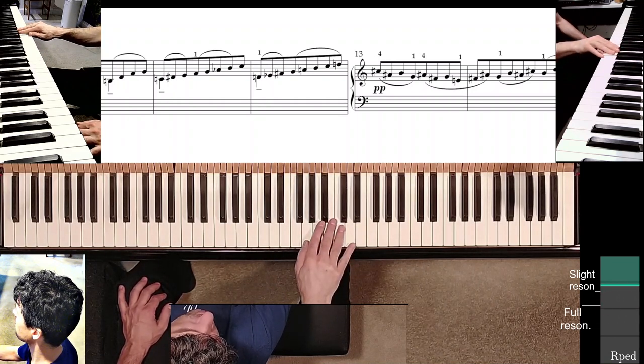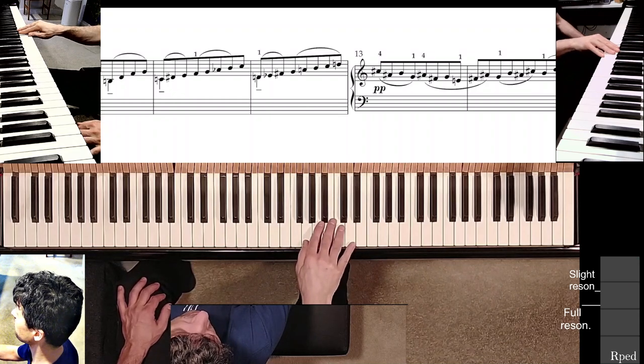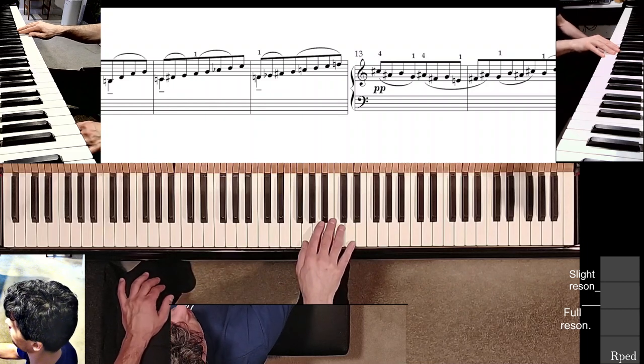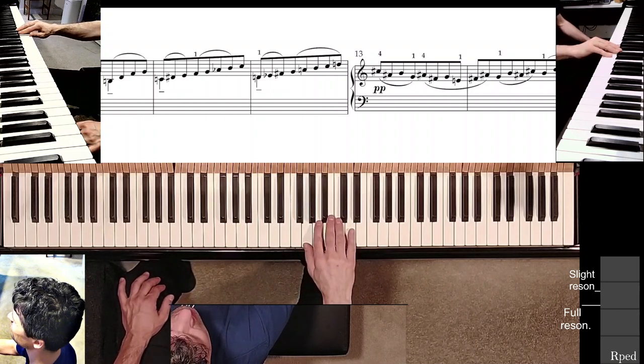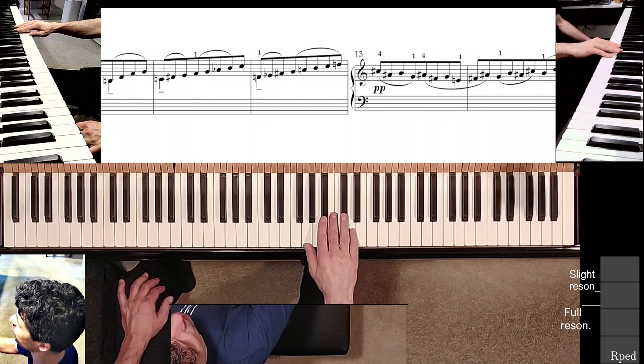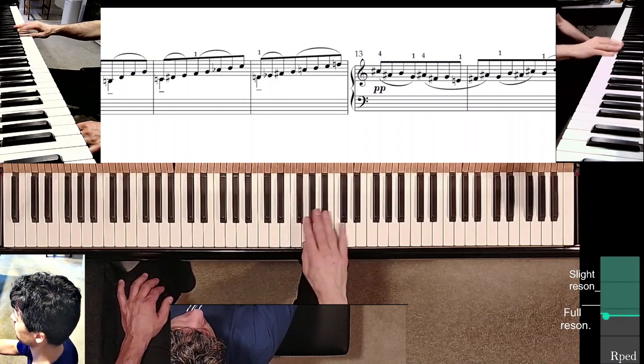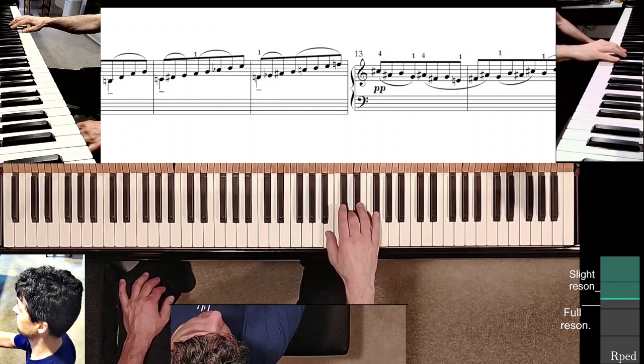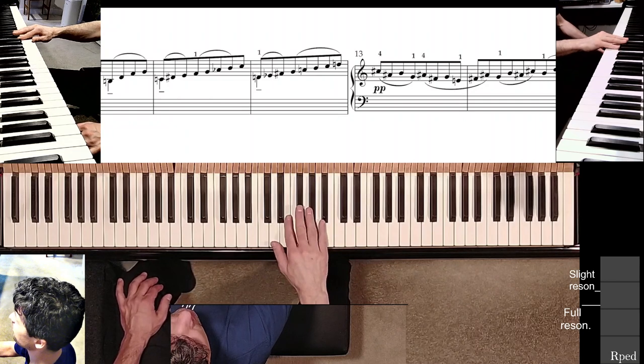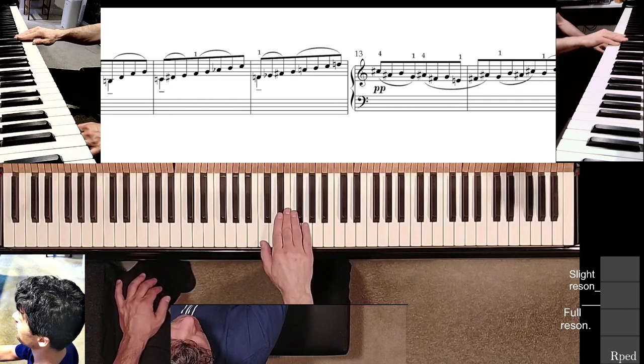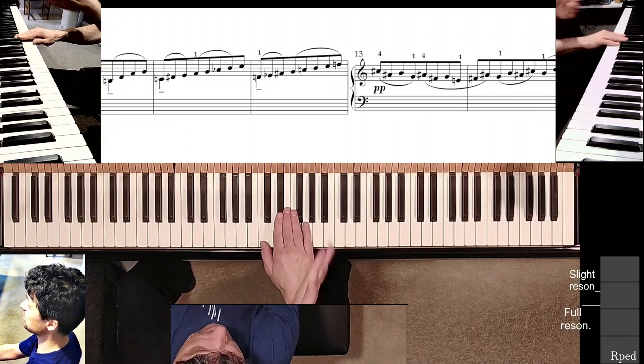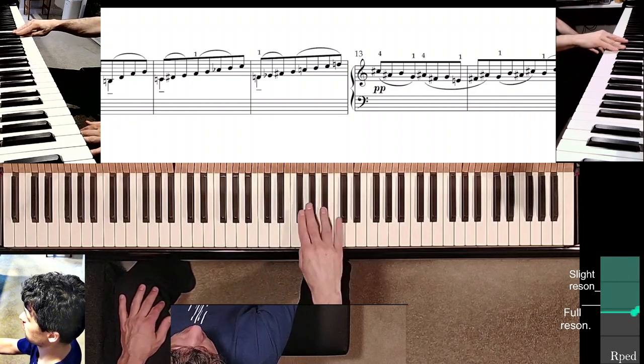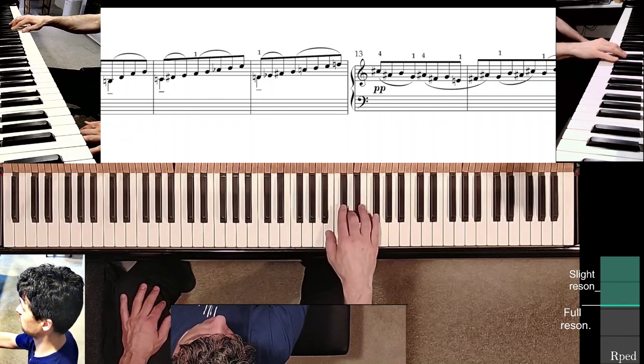But don't over-rotate, over-deviate, and play the fifth finger on the edge of this key, of D, right before measure 13, because you want to have easy time reaching C sharp with finger 4. I would definitely recommend working on keeping the fingers parallel to the keys.